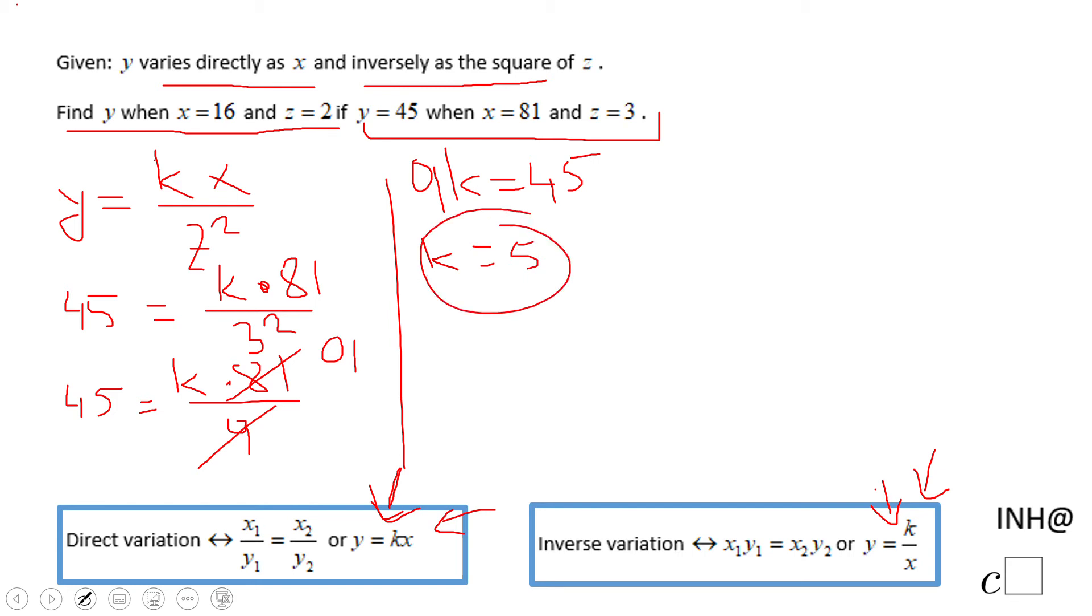So now we're going to go to the second part of the problem where we're going to replace k with 5 first. This is the equation that models our problem now that we know k, and we're going to use the first part.